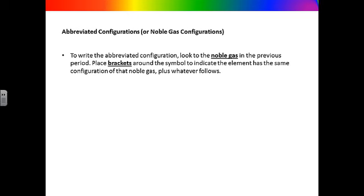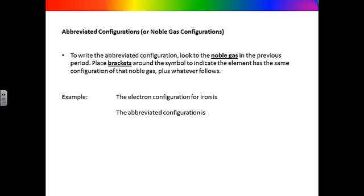To write the abbreviated configuration, or noble gas configuration, for an element, look to the noble gas in the previous period. Place brackets around the symbol to indicate the element has the same configuration as that noble gas, plus whatever follows. For example, iron has 26 electrons, so the electron configuration is 1s2, 2s2, 2p6, 3s2, 3p6, 4s2, 3d6. The boxed portion corresponds to argon, the noble gas in the previous period. So instead of writing all of that out, you can write [Ar] 4s2, 3d6.